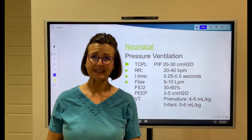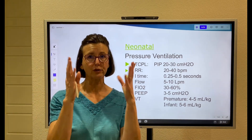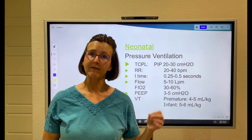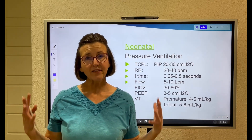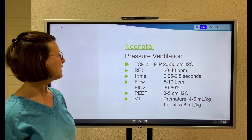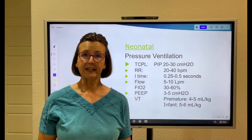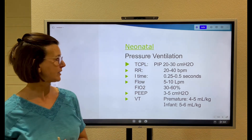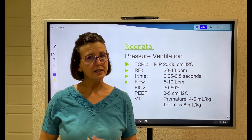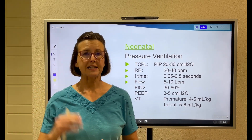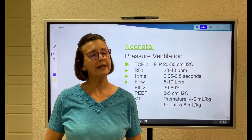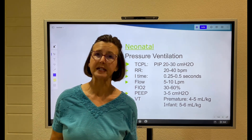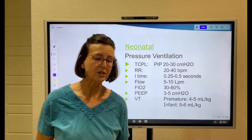For time-cycled pressure-limited ventilation, you must set an inspiratory time — you have to tell the machine how long the pressure is held. Eye time should be between 0.25 and 0.5 seconds; anything longer is excessive for the rate you're setting. Flow needs to be 5 to 10 liters per minute to generate pressure. FiO2 is 30 to 60 percent. For a preterm neonate, keep PaO2 at 50 to 70; for a term neonate, PaO2 can be 80 to 100.